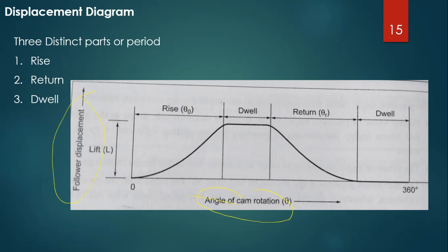The displacement from initial position to final position represents the total lift of the follower. The displacement diagram consists of three distinct parts: rise, return, and dwell.